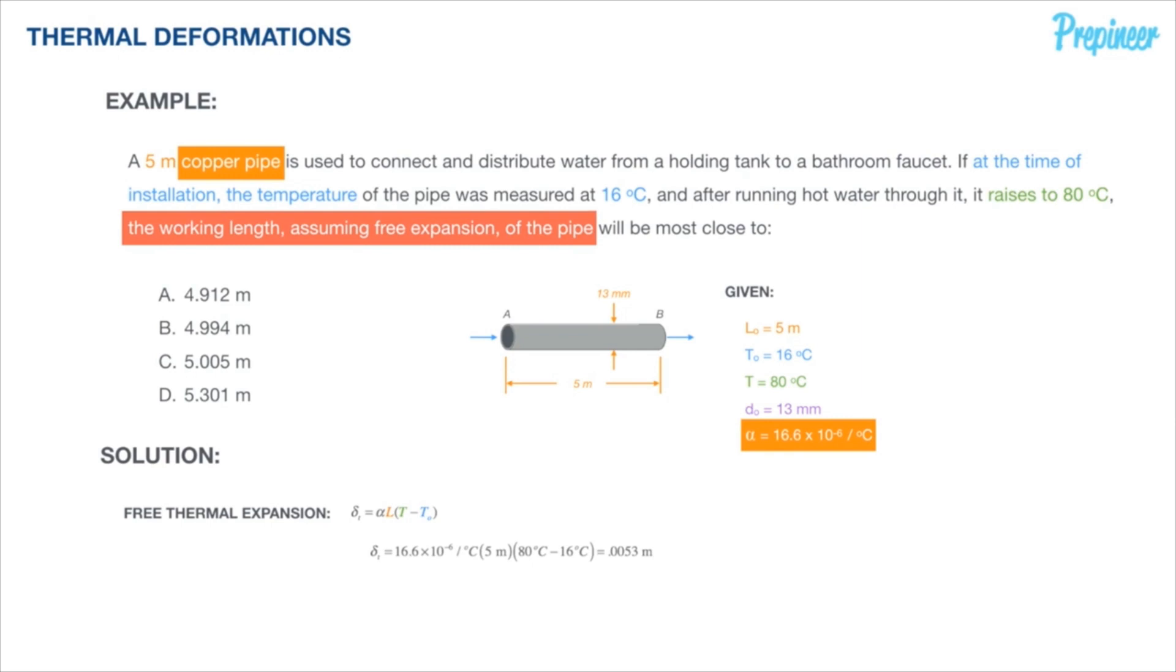That's an important piece of data we need, but we are asked to determine what the working length is. The working length is simply taking our original length and then either adding or subtracting what the delta will be based on our change in temperature. In this case, we're increasing and raising the temperature, which then gives us an expansion of our copper pipe of 0.0053. So we plug in the data to determine that our working length is going to be 5.005 meters.